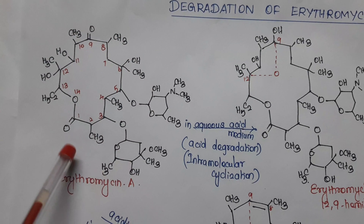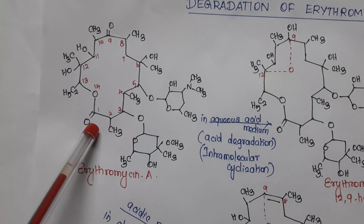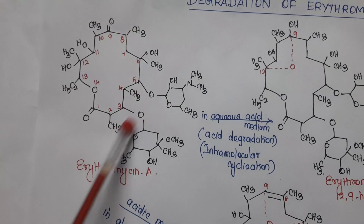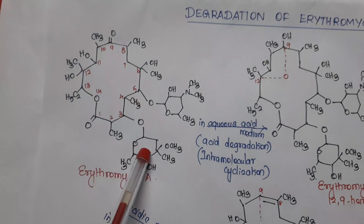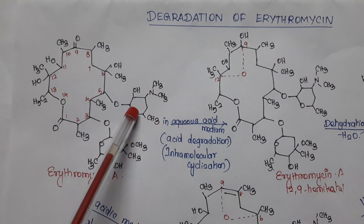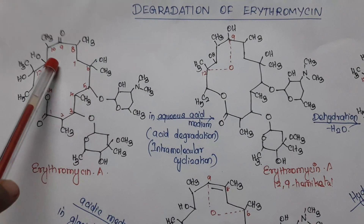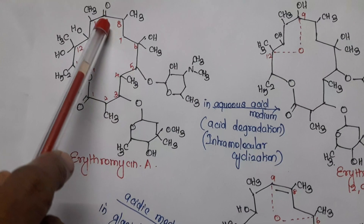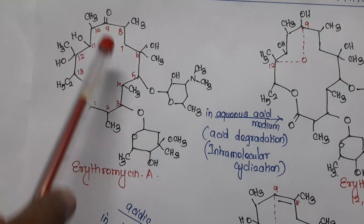This is the structure of erythromycin A. It is a macrolide having three parts: the macrocyclic lactone ring, ketone, and glycosidically linked sugars. It is a 14-membered lactone ring having two ketone groups — one at position 1 and another at position 9 — and having two sugars. This is L-cladinose attached at the third portion and D-desosamine attached at the fifth portion. The groups responsible for acid instability are the hydroxy group at the sixth portion, ketone at the ninth portion, and hydroxy group at the twelfth portion. These three groups are responsible for acid instability.